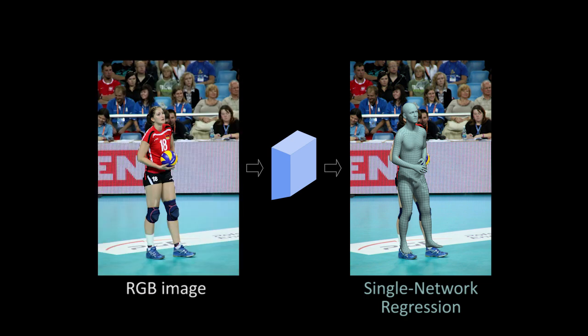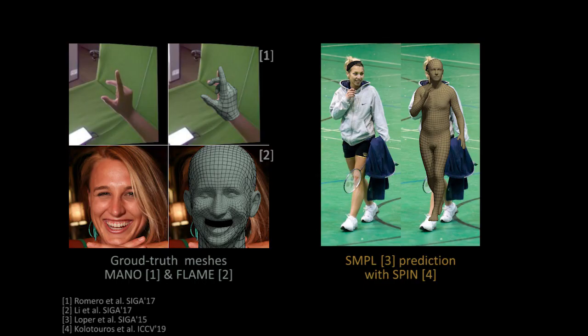However, such a single network can still provide a rough initialization for hands and faces. By breaking the problem down into parts, the community has taken a divide and conquer approach. The reconstruction of bodies, faces and hands is typically approached separately with part-specific models.